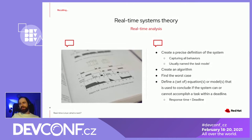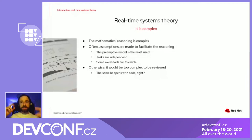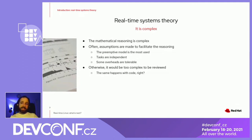Real-time system theory is generally considered a complex subject because the mathematical reasoning is complex. In order to facilitate the development of new theories, some assumptions are made to facilitate reasoning, like assuming the system is fully preemptive, assuming all processes are independent, and that overheads are tolerable.